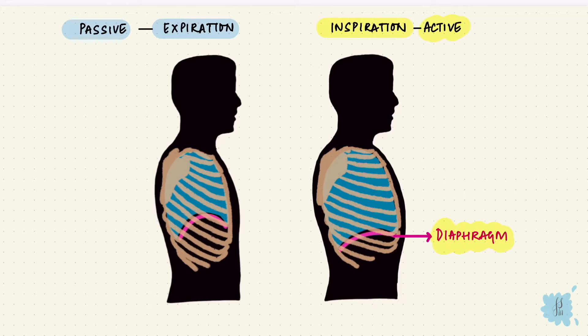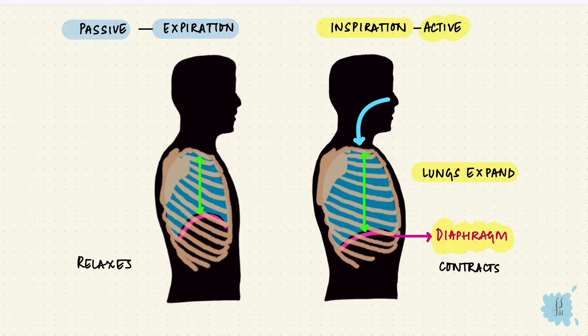Most of the work of inspiration is done by the diaphragm alone. When it contracts, it flattens, so the vertical dimension will increase. The lungs expand and air enters the lungs. During expiration, the opposite happens — the diaphragm relaxes, the thoracic volume reduces, the lungs contract, and air gets out.